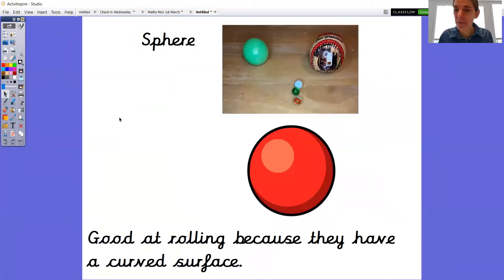Do you remember the name of this shape? It's a tricky one, isn't it? It's called a sphere. Let's say that together. Sphere. Brilliant. And you see different things that are sphere shape. Balls are spheres and they're good at rolling. Spheres are good at rolling because they have a curved face. Curved face. It goes all the way round. And that's a sphere.